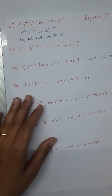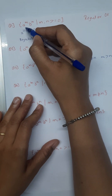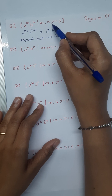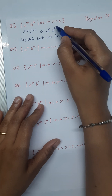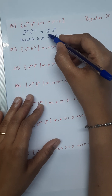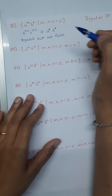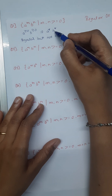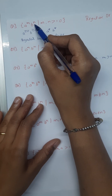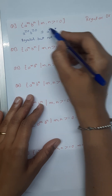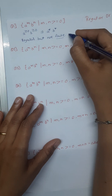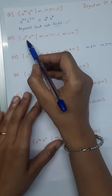Let's begin. The first example is a raised to m, b raised to n, where m and n are greater than or equal to 0. This means we can write a* and b*. This type of grammar will be regular since the power of a and the power of b are different. We can conclude that this grammar is regular, though it will not be finite.